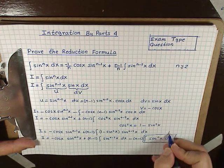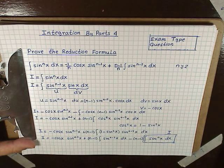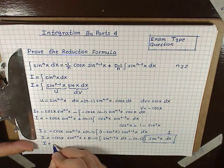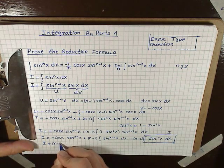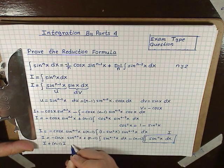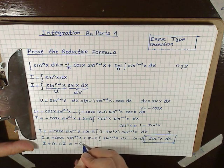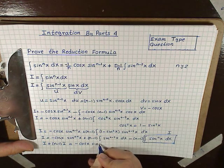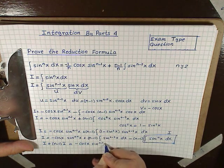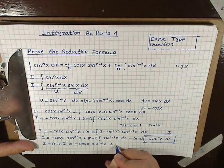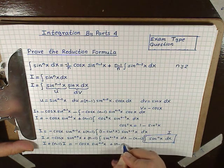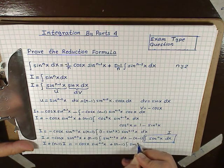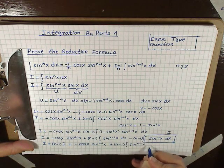This allows us to bring it to the left-hand side. So we get I plus (n-1)I = -cos(x) sin^(n-1)(x) plus (n-1) times the integral of sin^(n-2)(x) dx.